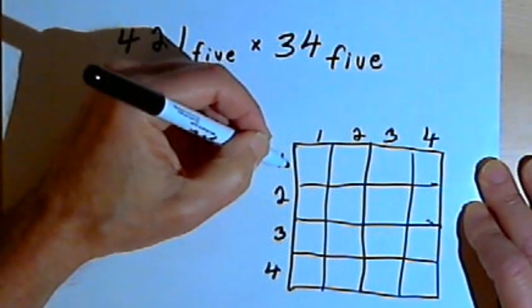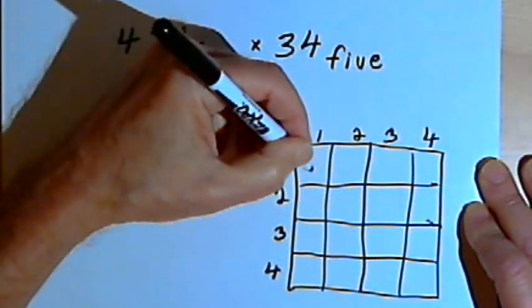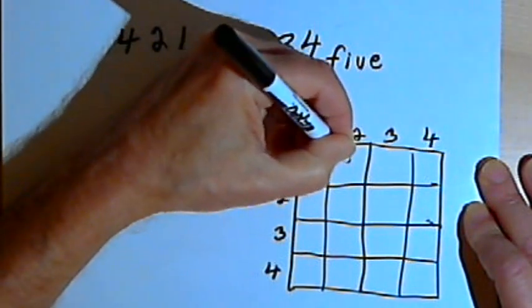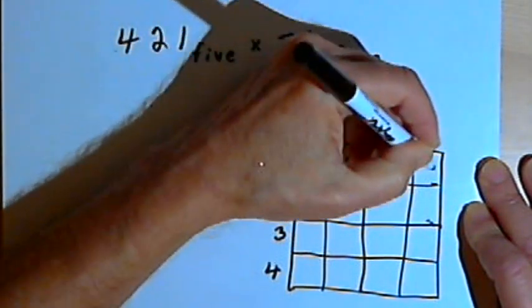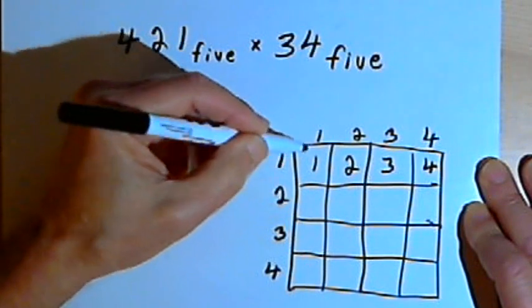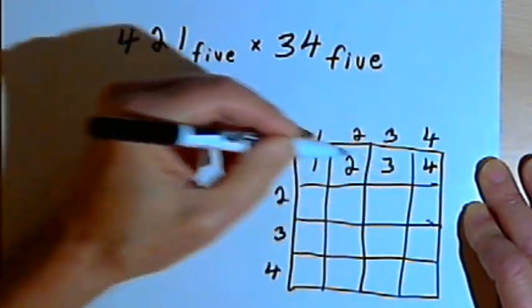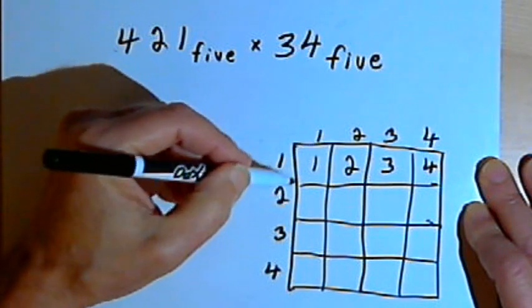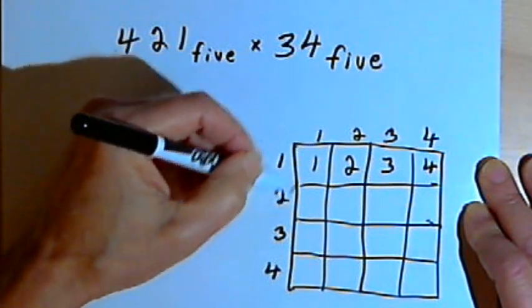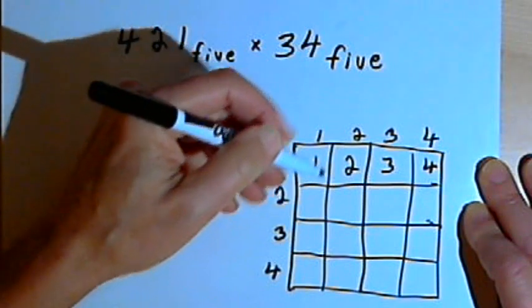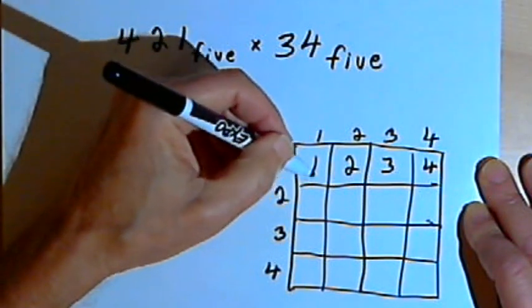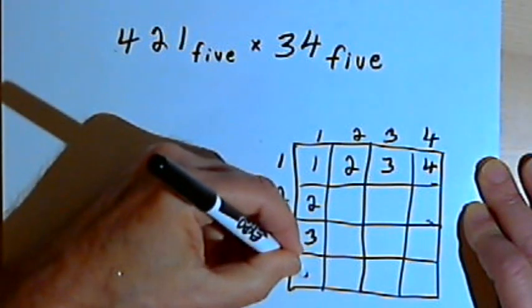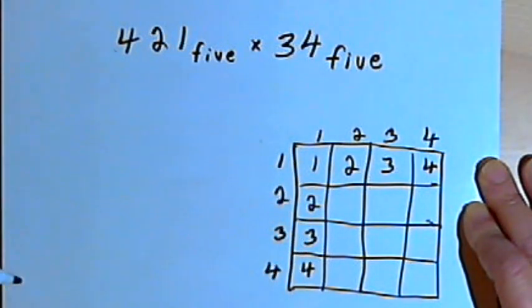So I know that 1 times any number is the number that I'm multiplying. So for my first row across, 1 times 1 is 1, 1 times 2 is 2, 1 times 3 is 3, and 1 times 4 is 4. I'm sorry, that was the first row across. For the first column down, I'm going to have the same thing, because I'm just doing 1 times 1, and then 2 times 1, and 3 times 1. So the commutative property is going to tell me that I have the same numbers in the first column as in the first row.